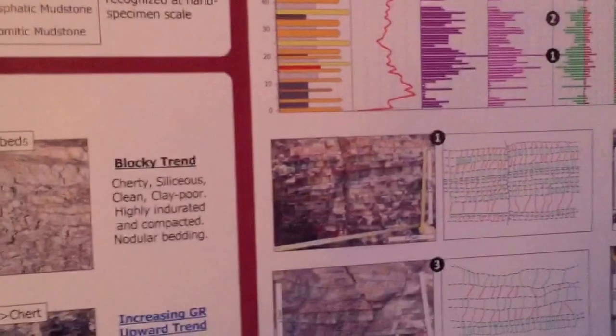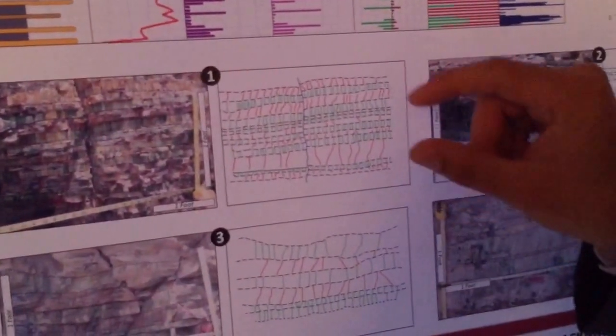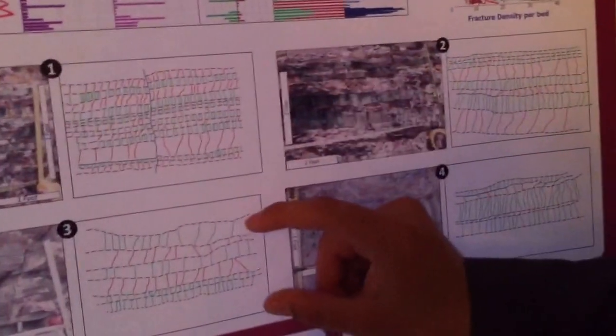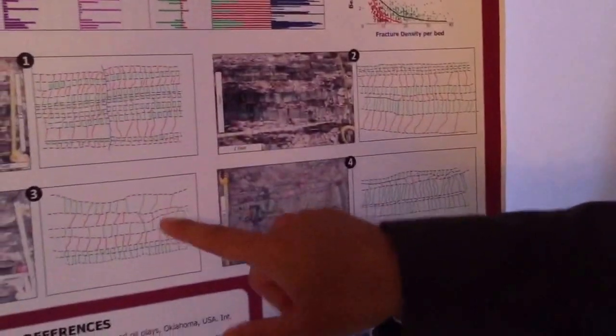To show this, we made these fracture maps. For example, in this fracture map, we have in one foot more beds than in this one. And as you can see here, there is more fracture density than in this foot.